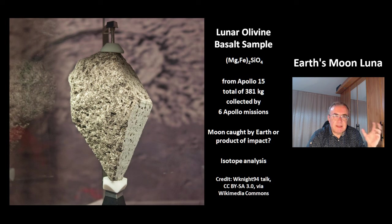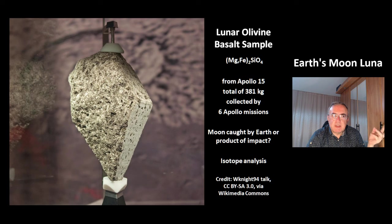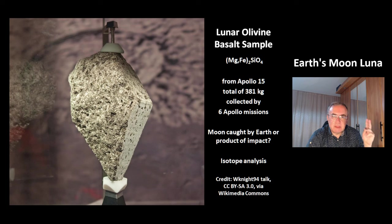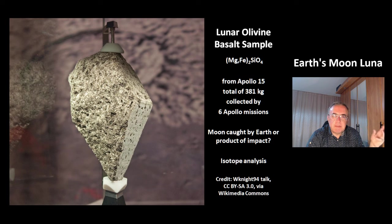How was the system of Earth and Moon formed? There are two possibilities: number one, planet Earth captured the Moon; number two, an impact. A way to find the answer is isotope analysis of these samples and comparing it to samples from Earth's crust.